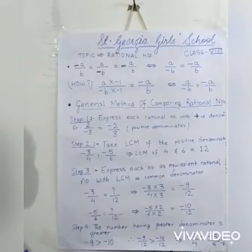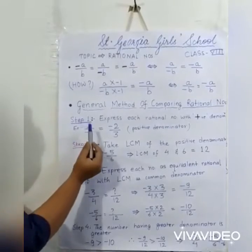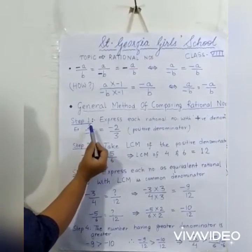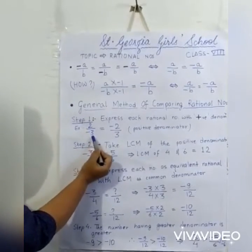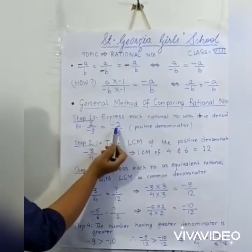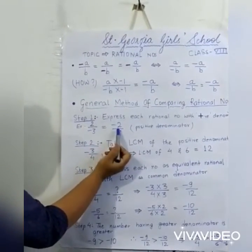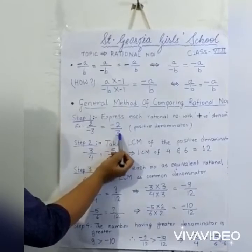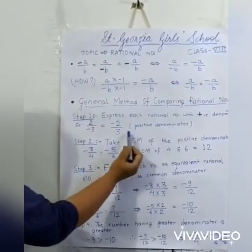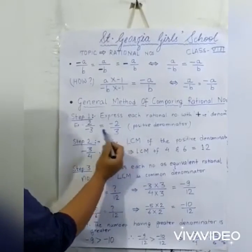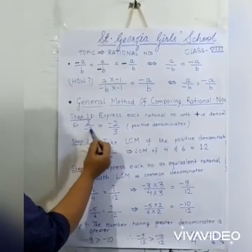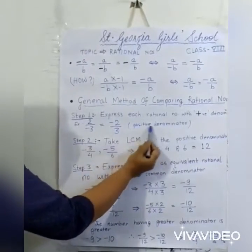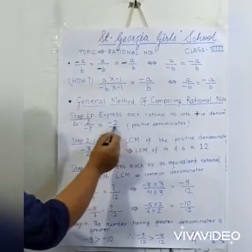For example, if 2 by minus 3 is given, convert it to standard form: minus 2 by 3. Here the denominator 3 is now positive, converted from negative minus 3.